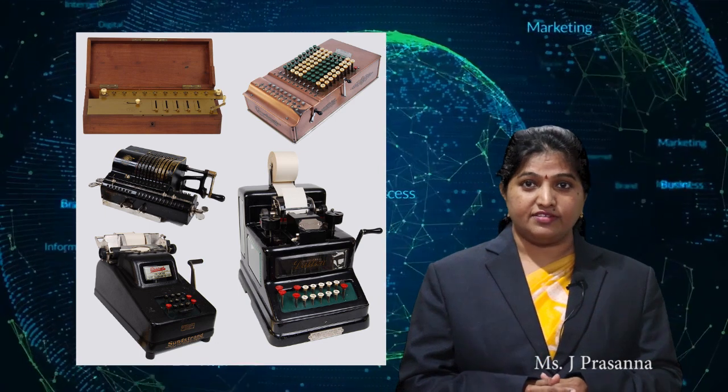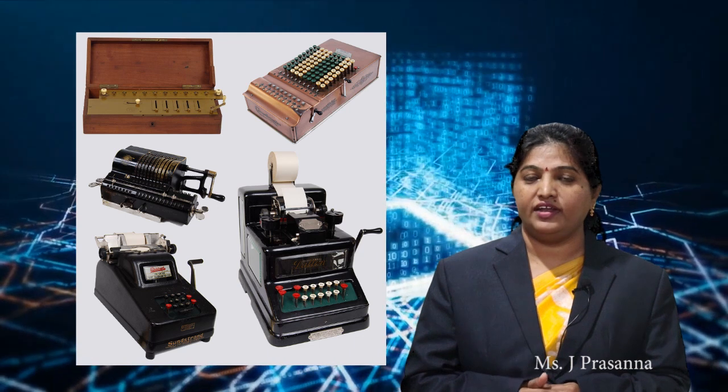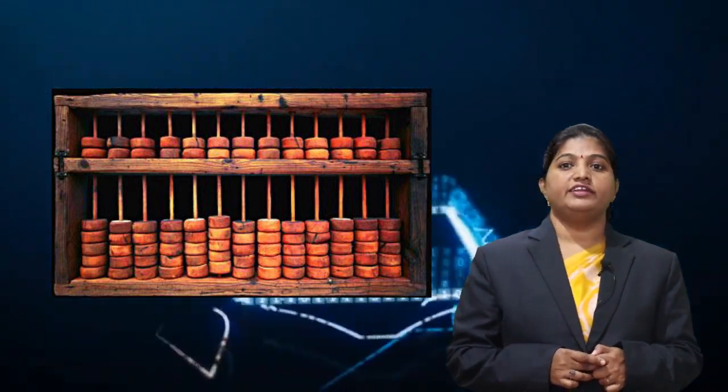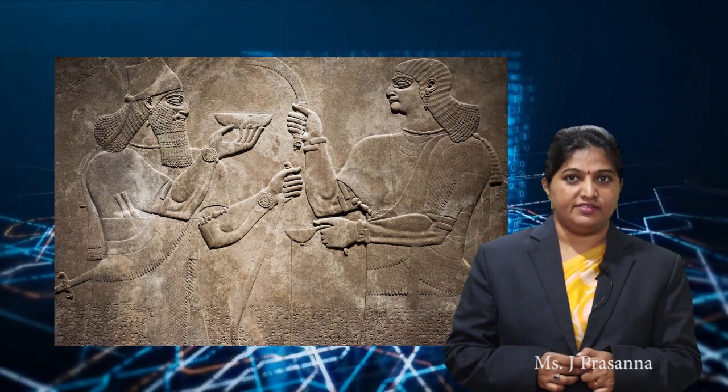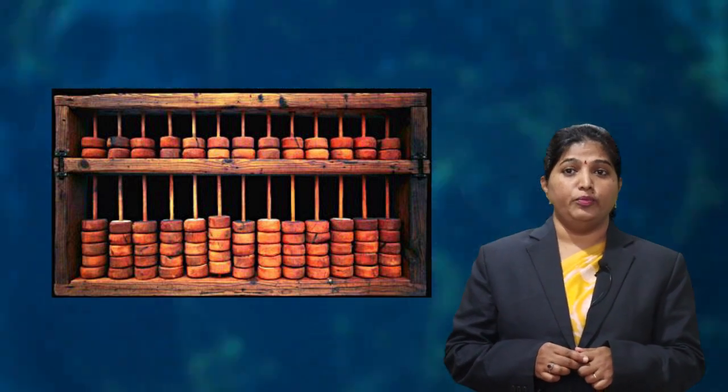We will see some early calculating devices starting from Abacus, Napier's bones, analytical engine, Mark 1, etc. The first early calculating device was Abacus. It was the first mechanical device used for calculations. It was invented by Mesopotamians around 3000 BC. Abacus stands for Abundant Beads, Adhesion, and Calculation Utility System. It consisted of beads on movable rods divided into two parts.